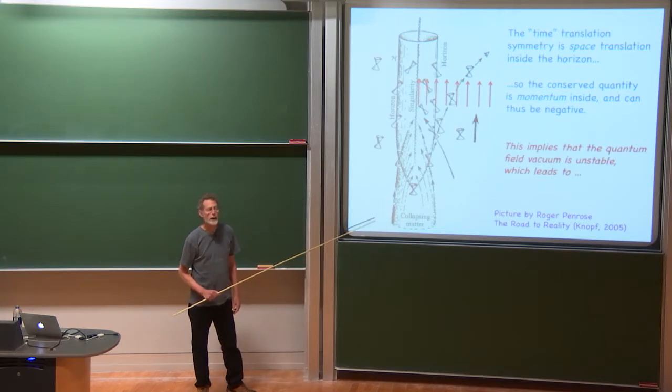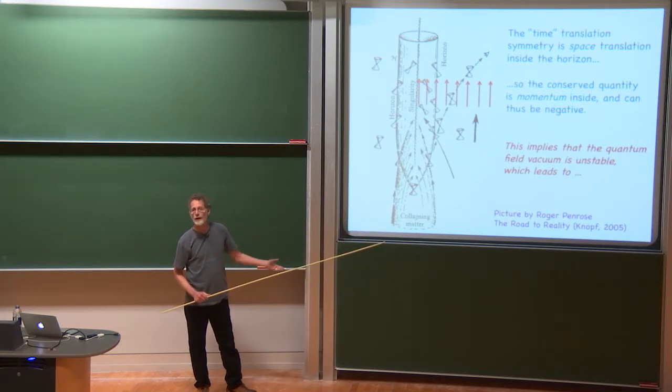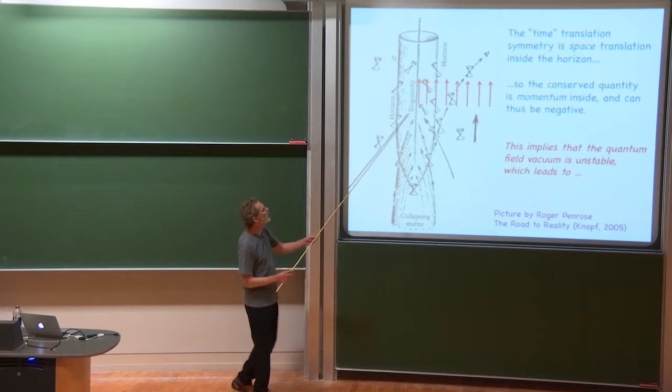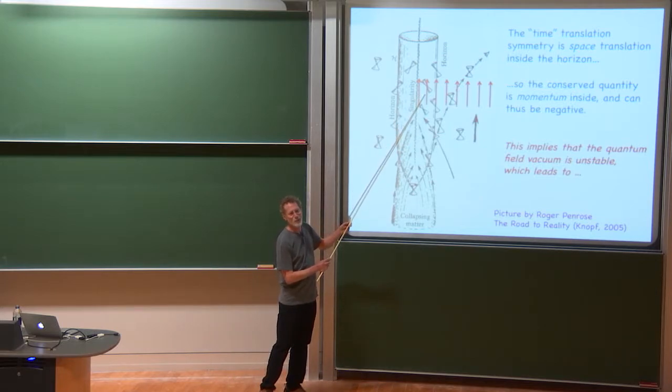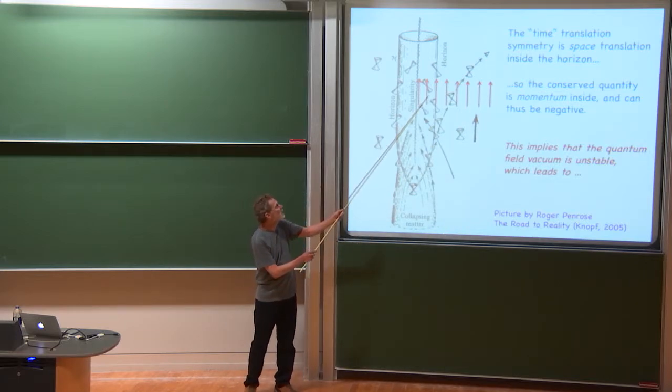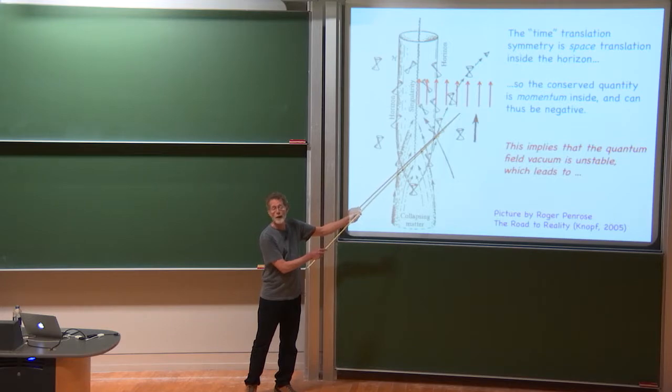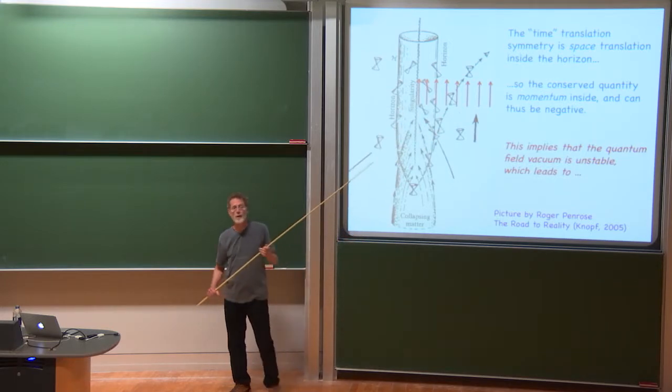But note that on the horizon, that upward shift is actually on the edge of the light cone, so it's at the speed of light. It's not a time translation. It's a light-like translation. And inside, it's a space-like translation. So the conserved quantity related to this symmetry is really like momentum inside here and like energy outside here.